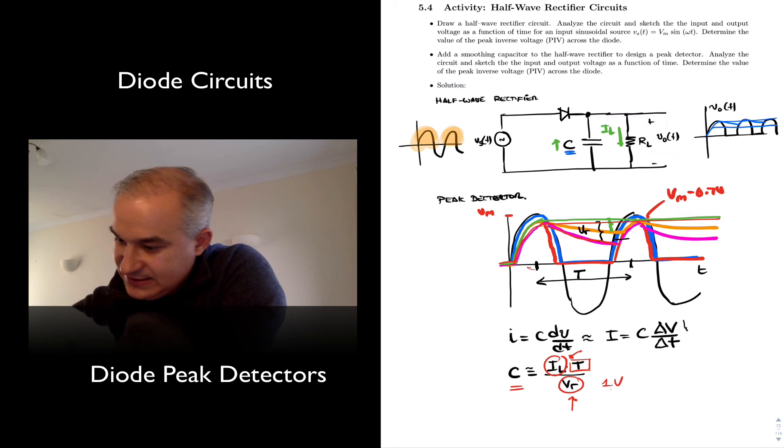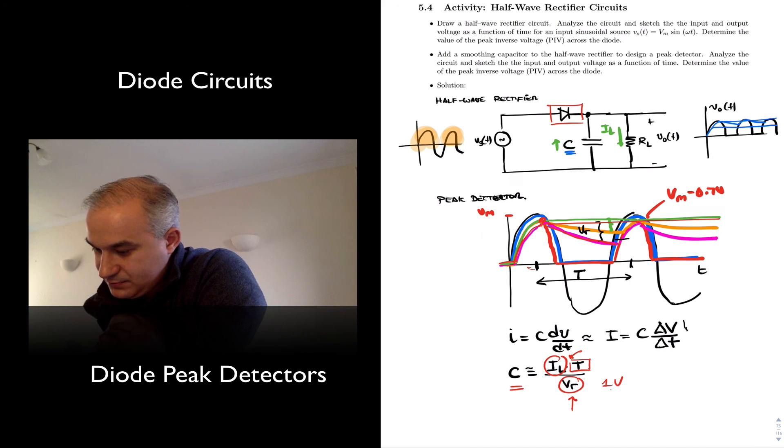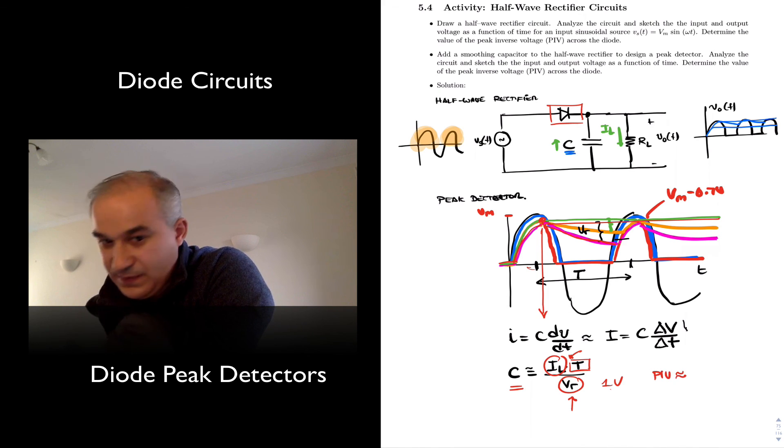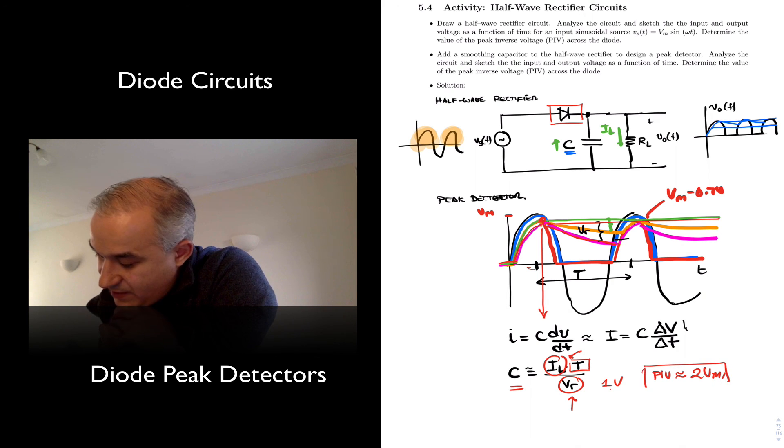Peak inverse voltage, in this case, notice that the capacitor, the diode, is not conducting from here, in this case, all the way to here. So it's approximately equal to the peak inverse voltage, approximately equal to 2 times Vm. Remember that the breakdown voltage of the diode needs to be less than the peak inverse voltage.